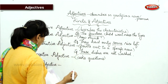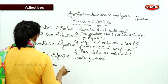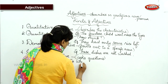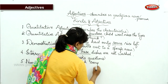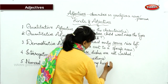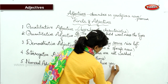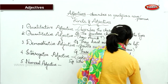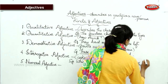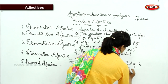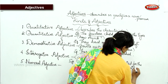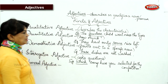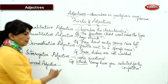The interrogative adjective asks questions. For example: 'Which song have you selected for the competition?' Here, 'which' is asking a question about a specific noun — the song. So 'which' is the interrogative adjective.